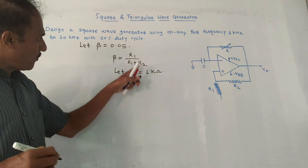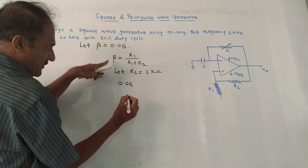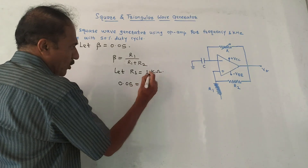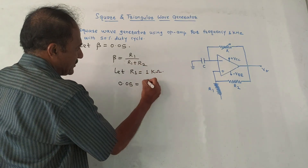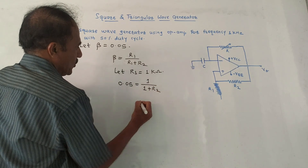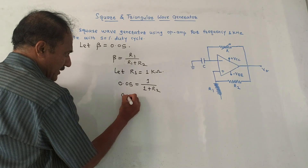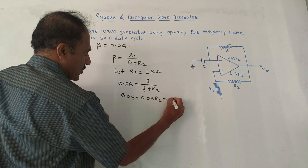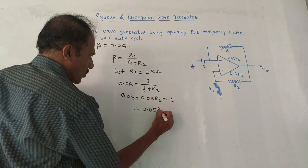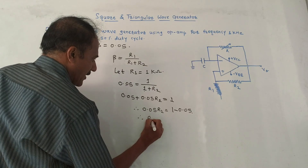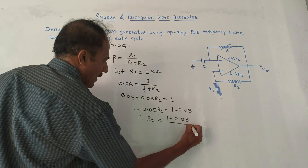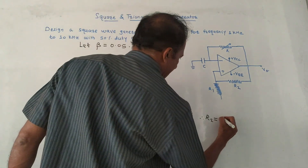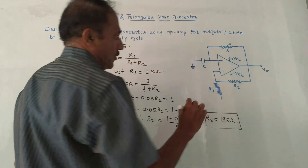Substituting into the equation: 0.05 = 1 / (1 + R2). By cross multiplication: 0.05 × (1 + R2) = 1, giving 0.05 + 0.05R2 = 1, so 0.05R2 = 1 − 0.05. Therefore R2 = (1 − 0.05) / 0.05. Solving this gives R2 = 19 kΩ. Now we need to determine the values of capacitor C and resistor R.